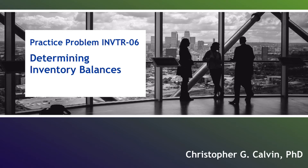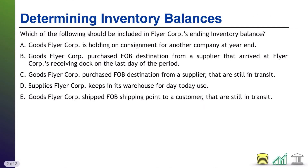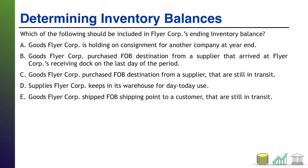Welcome to Practice Problem Inventory 06. This one is about determining inventory balances. I give you a multiple choice with five options: which of the following should be included in FlyerCore's ending inventory balance? Take a moment, read through your options, see if you can pick which of these should be included, and when you're ready come back and I'll walk you through the solution.